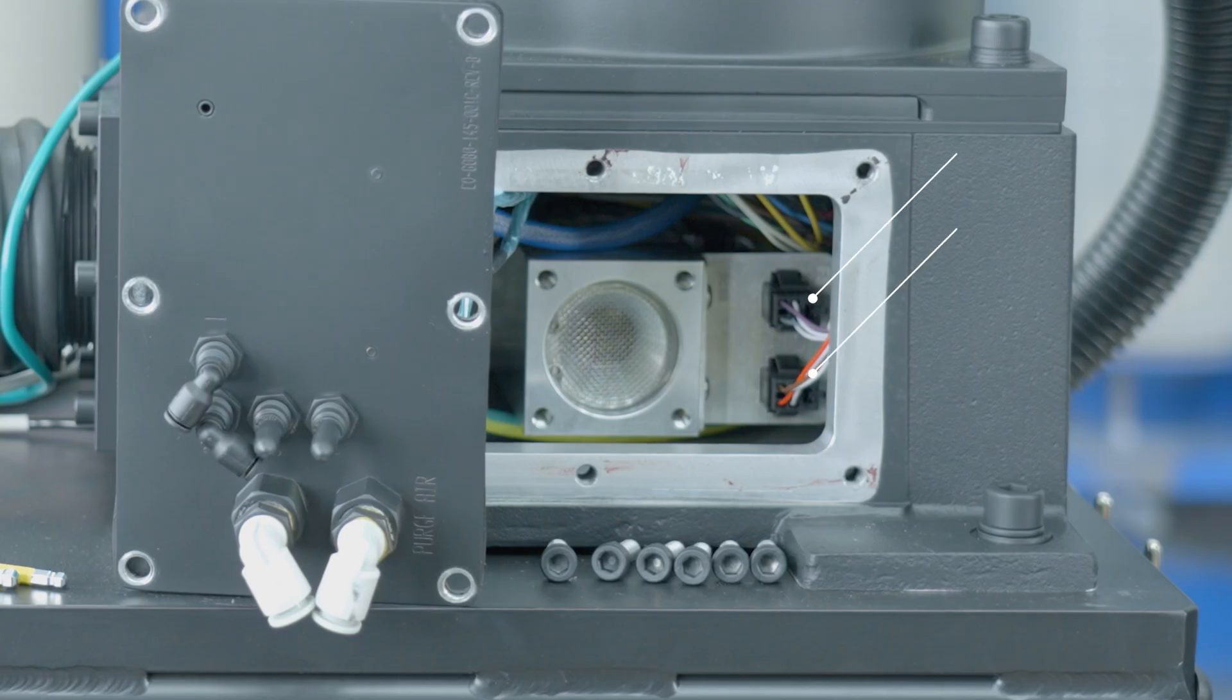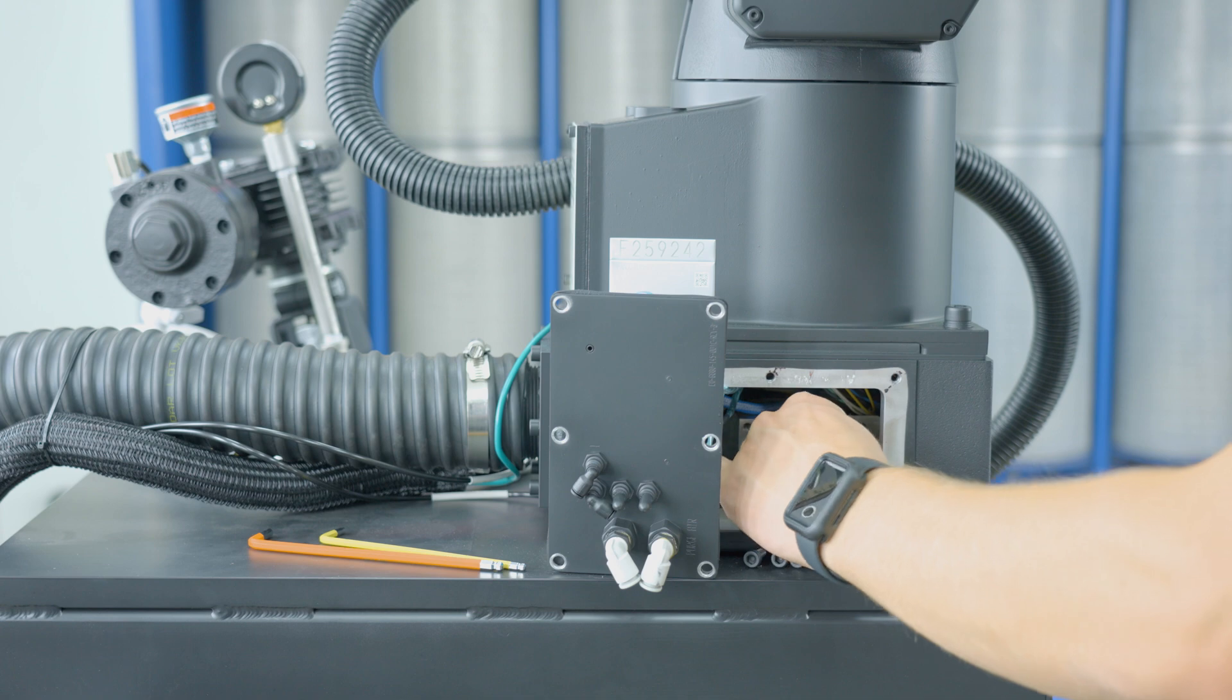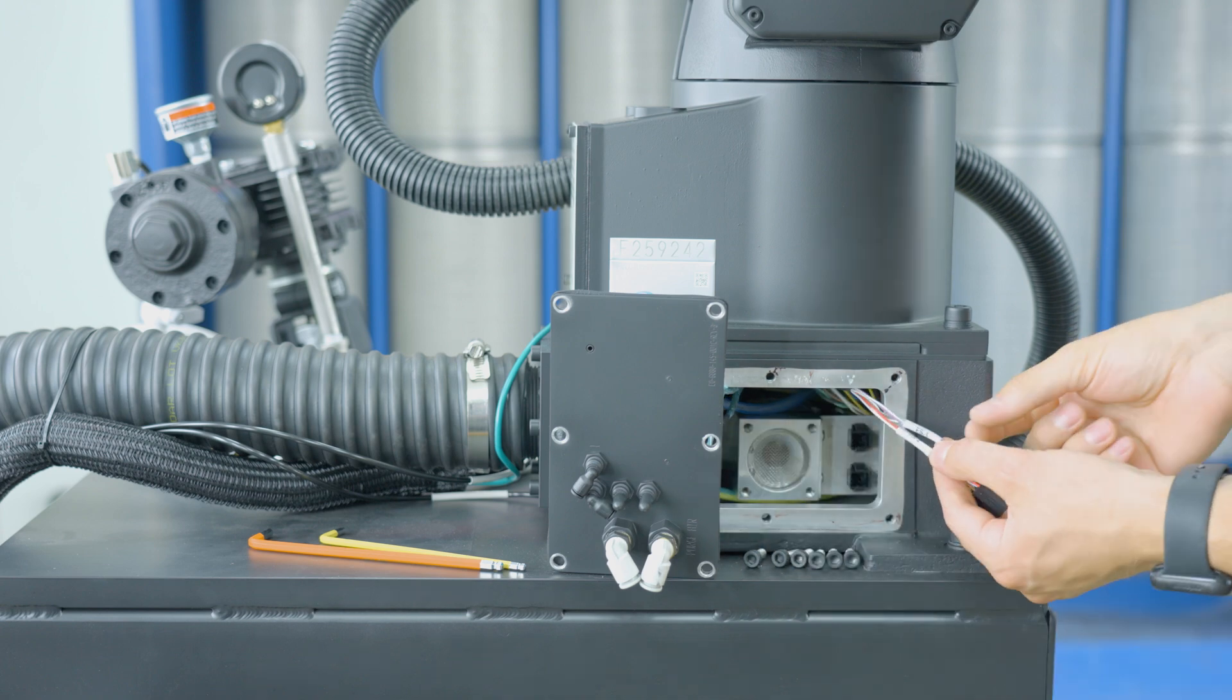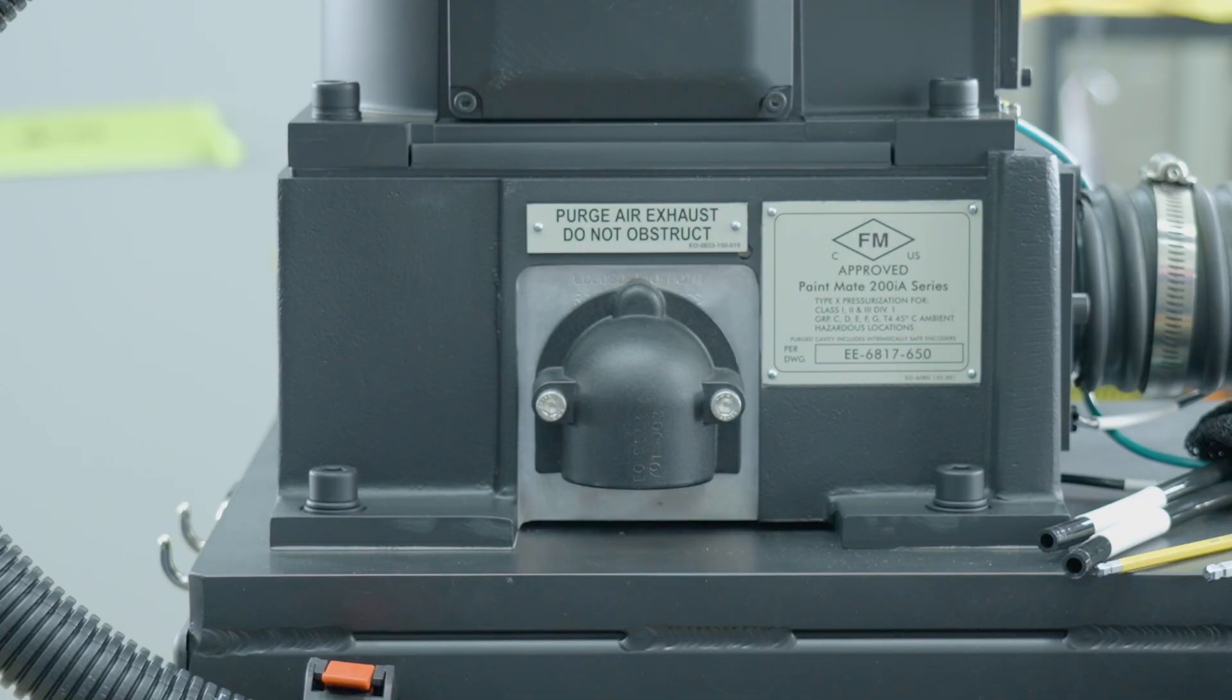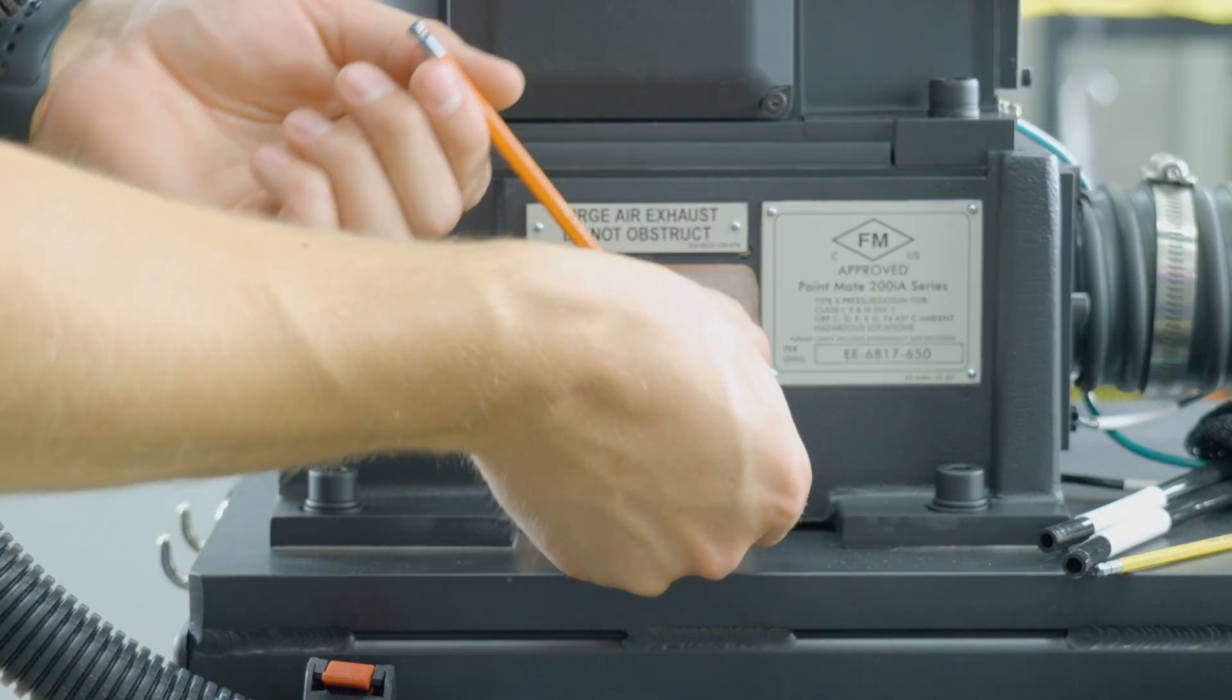Note the location of each connector before removing from the purge switch. Begin removal of the purge air exhaust with a 5 millimeter allen wrench.